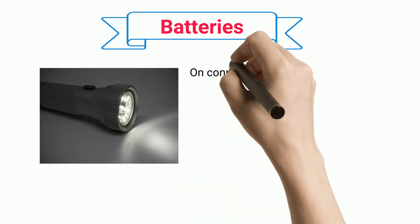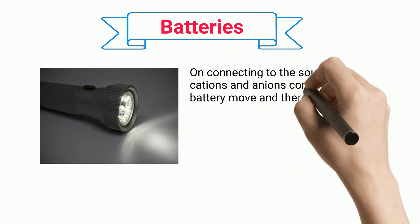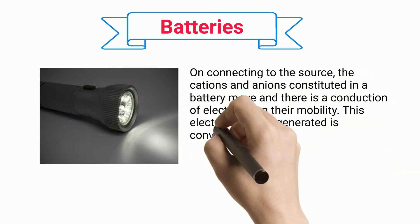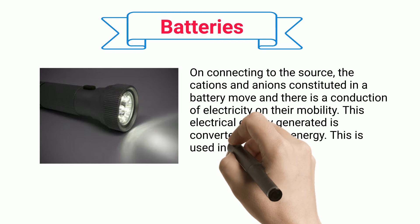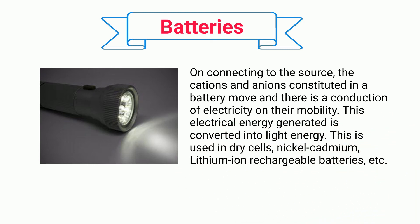Batteries. On connecting to the source, the cations and anions constituted in a battery move and there is a conduction of electricity on their mobility. This electrical energy generated is converted into light energy. This is used in dry cells, nickel-cadmium, lithium-ion rechargeable batteries, etc.